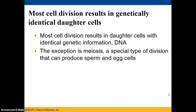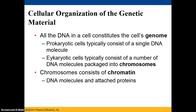Most cell division is going to result in daughter cells that are genetically identical, or contain identical DNA. The exception is meiosis, because meiosis produces sperm and egg cells, and they only have half of the genetic material of the original cell. So we're going to focus on mitosis here.